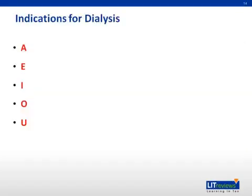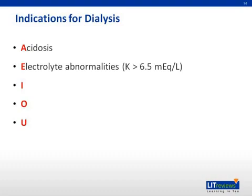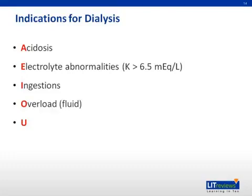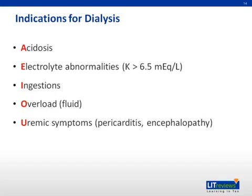Indications for renal replacement therapy — most often hemodialysis — are remembered by the acronym AEIOU. A is for acidosis, as an acidic pH can cause serious detriment to the body. E is for electrolyte abnormalities such as hyperkalemia, hypercalcemia, and hyperphosphatemia; hyperkalemia in particular can cause cardiac arrest and must be corrected. I is for ingestions of toxins or medications requiring dialysis to aid clearance. O is for volume overload compromising respiratory status. U is for uremic symptoms such as uremic pericarditis, anorexia, and uremic encephalopathy.